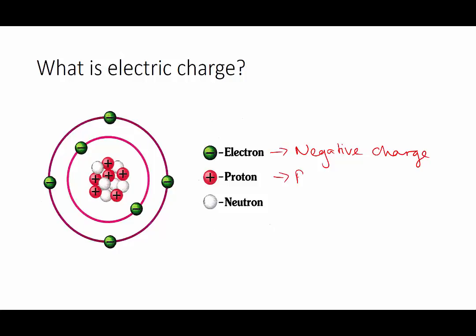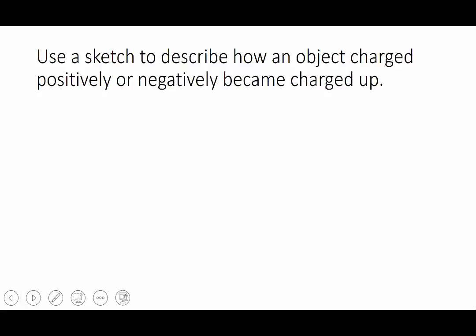Then in the centre of the atom we have a nucleus, which contains protons with positive charge, and neutrons which are neutral or have no charge at all. It's important that we know the electrons around the outside because that's what moves when we charge something up.